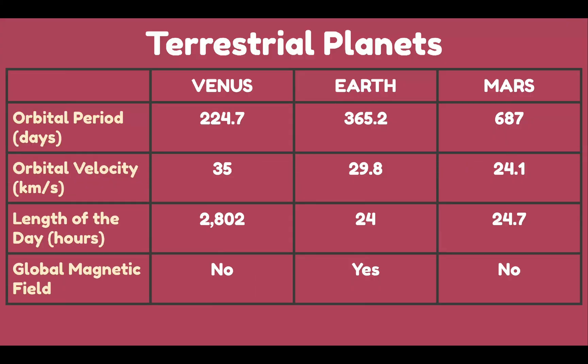The next set of properties includes orbital period and velocity, which are related to planets' distance from the sun. Among the three, Venus is the nearest and Mars is the farthest. We also have the length of day, which is a function of rotational speed. We also have the global magnetic field. The Earth's magnetic field is believed to be the consequence of the presence of a solid metallic inner core and a liquid metallic outer core, which will be discussed in the next videos.